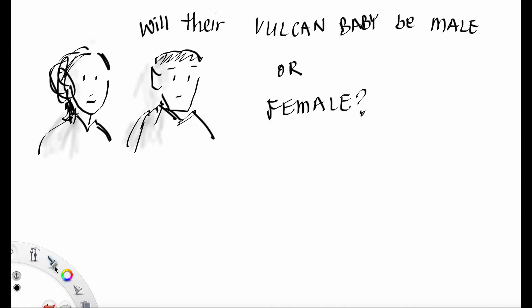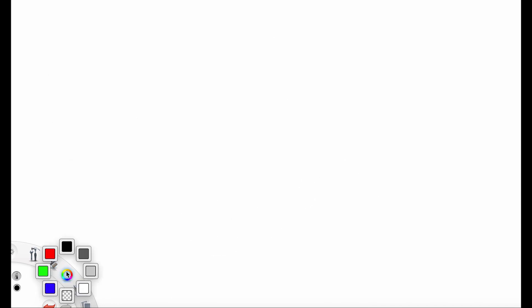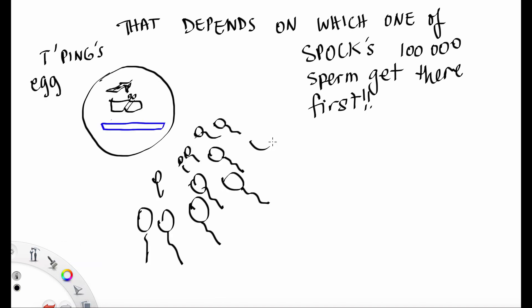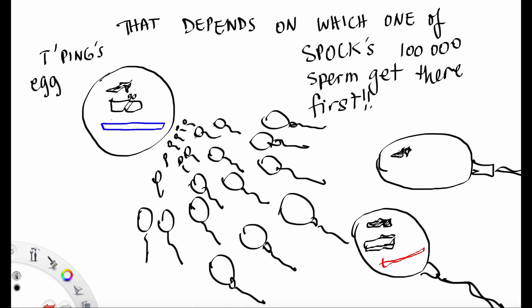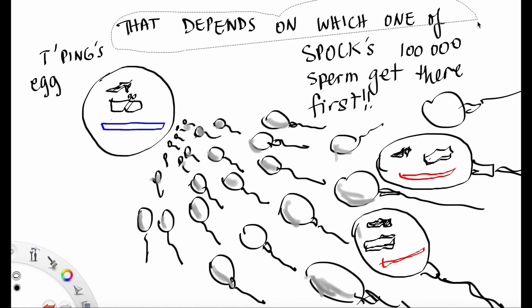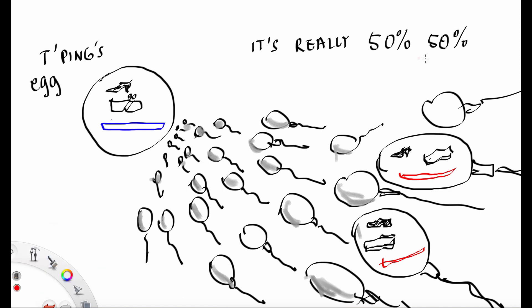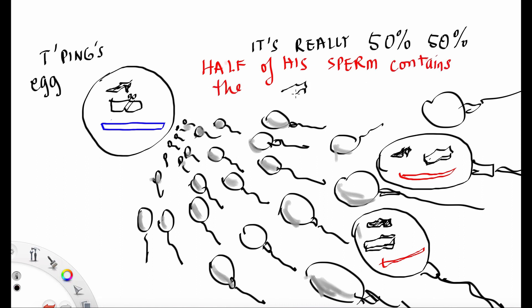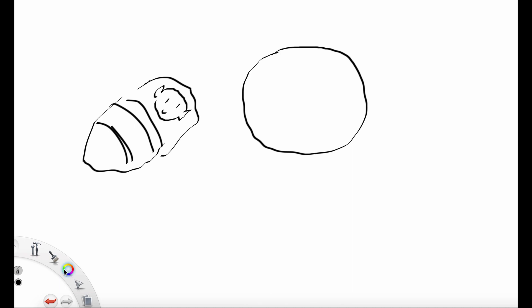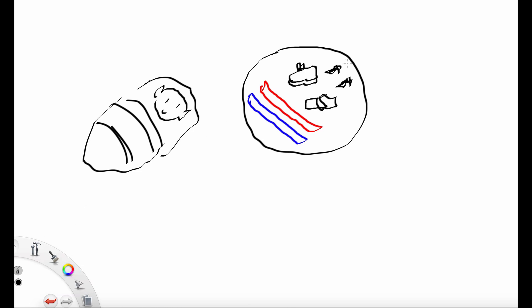Will their Vulcan be male or female? That depends on which one of Spock's sperm gets there first. Half of his sperm has the lady's dancing shoe, and the other half has the man's dancing shoe — so it's really 50-50. During fertilization, each of these sperm are hurtling towards the egg. The baby is going to get a ski from mom and a ski from dad, a running shoe from mom and a running shoe from dad, and a shoe from mom and a shoe from dad.